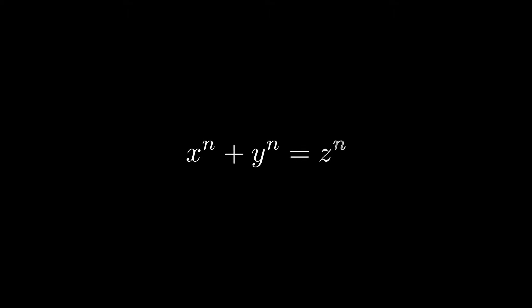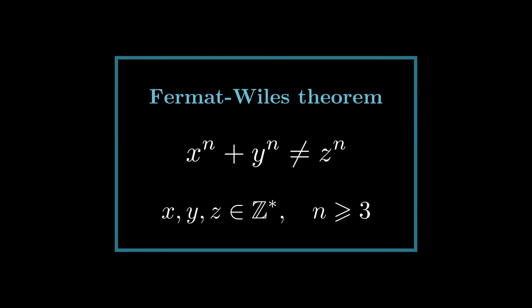This is probably one of the most famous equations ever put to paper. After enjoying over 350 years of mystique, Andrew Wiles proved the equation does not have solutions in the non-zero integers if n is at least 3.